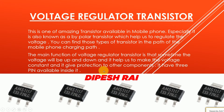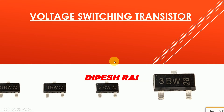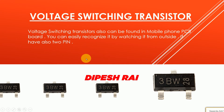Now we are discussing the voltage switching transistor. You can see it has two pins. Voltage switching transistors can also be found in mobile phone PCB boards — you can easily recognize them from the outside because they have two pins. You can also identify them using the numbers printed on them, though the numbers may differ.